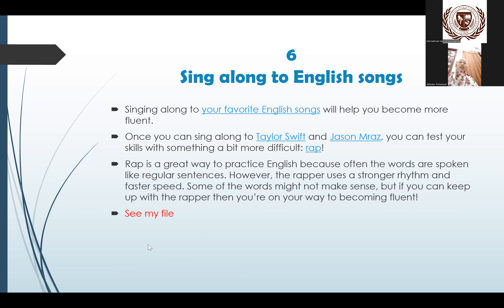Sing along to English songs. Everybody has favorite songs and you can sing along to them. Singing along to your favorite English songs will help you become more fluent. Once you can sing along to Taylor Swift, for example, and Jason Mraz, you can test your skill with something more difficult such as rap. Rap is a great way to practice English because often the words are spoken like regular sentences. However, the rapper uses a stronger rhyme and faster speed. Some words might not make sense, but if you can keep up with the rapper, you are on the way to becoming fluent.